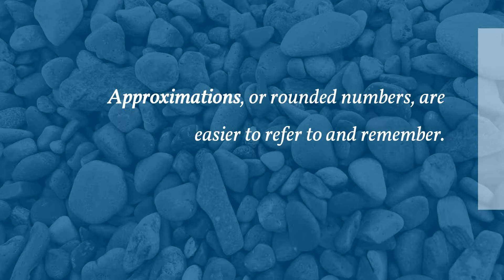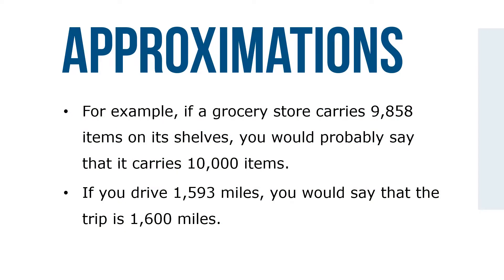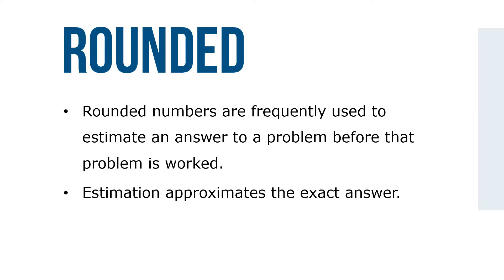Approximations, or rounded numbers, are easier to refer to and remember. For example, if a grocery store carries 9,858 items on its shelves, you'd probably say that it carries 10,000 items. If you drive 1,593 miles, you'd say that trip is 1,600 miles. Another rounding application in business involves money. Rounded numbers are frequently used to estimate an answer to a problem before the problem is worked. Estimation approximates the exact answer.